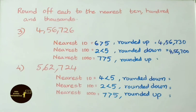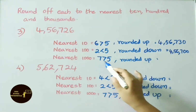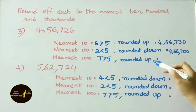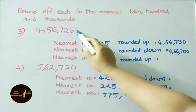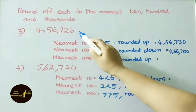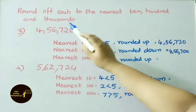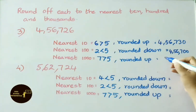Nearest 1000 for 4,56,726: the digit to the right of the 1000s place is 7. Since 7 is greater than 5, we round up — make the last three digits 000, and 6000 becomes the next 1000. So the answer is 4,57,000.